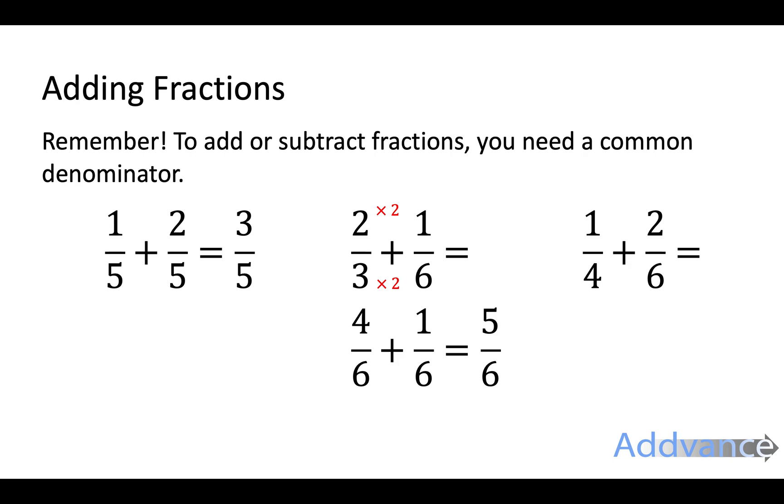Now the final 1 quarter plus 2 sixths I want the bottom number to be the same and I think I'm going to go for 12 here by multiplying by 3, multiplying by 3, multiplying by 2, multiplying by 2. That gets 3 twelfths plus 4 twelfths is 7 twelfths and that's the final answer.